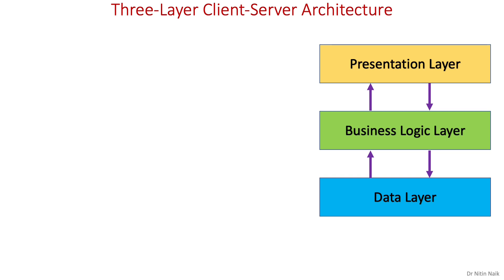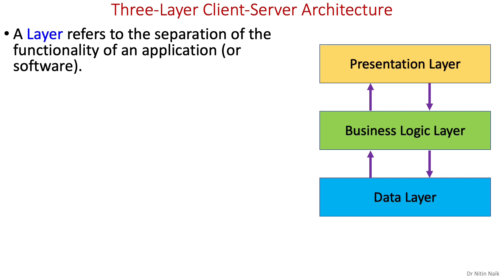A layer refers to a functional division of an application or software, meaning that we can develop and manage an application into different logical components based on the separation of various functionalities. These different layers can be implemented on the same system or on different systems. The most common layers of the client-server architecture are the presentation layer, business logic layer, and data layer, which form the three-layer architecture.